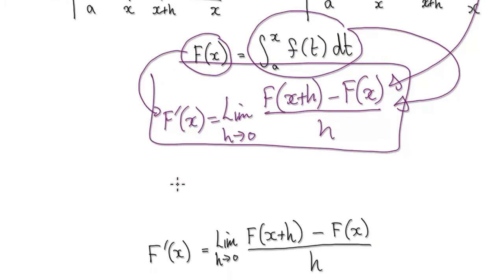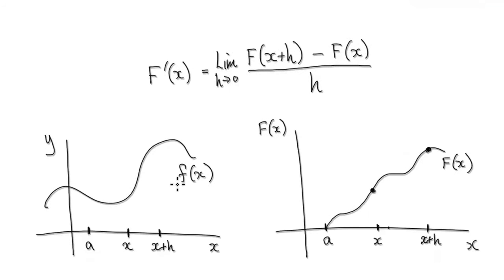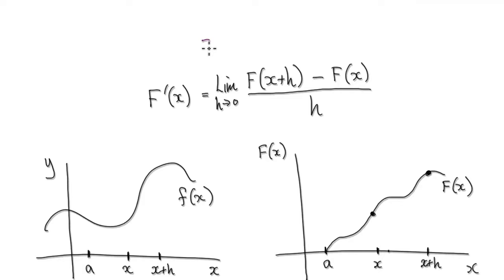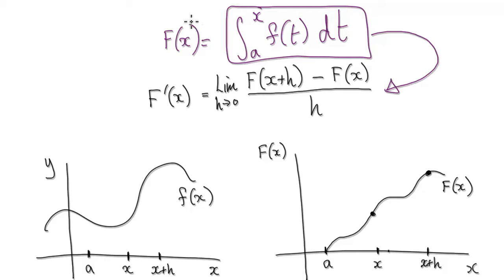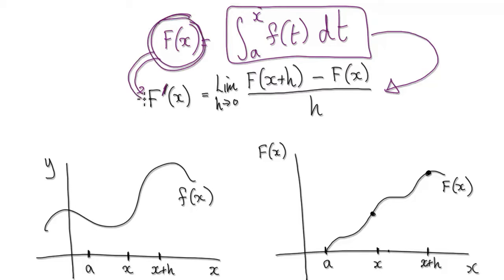So originally we had F of x equals the integral from a to x of f(t) dt, which turns out to be a line graph. We can actually differentiate it. On the left-hand side, we call the result capital F prime, because prime represents differentiating a function. So when you differentiate capital F, we assign it the name capital F prime of x.